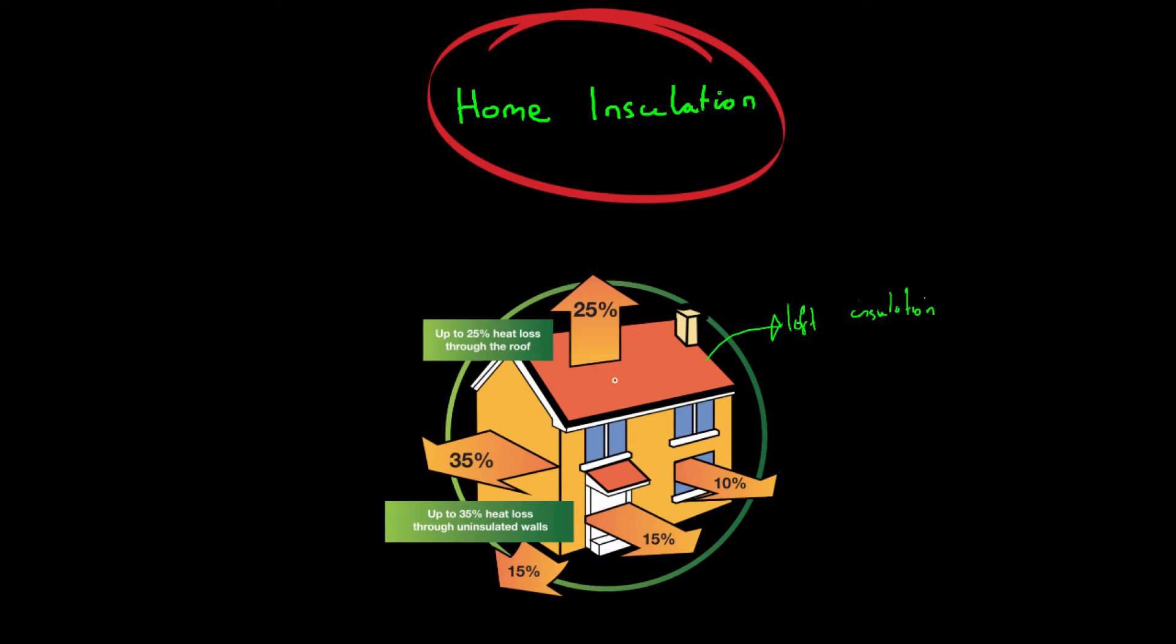And so this is a place where you can lose a lot of your heat. Okay, and this is often made from fiberglass. Now this is a very good insulator and it slows down of course the rate of energy transfer. What also happens is the fiberglass will trap air, and this air also stops the rate of energy transfer by conduction. So it will reduce the amount of conduction because air is not a very good conductor of heat.